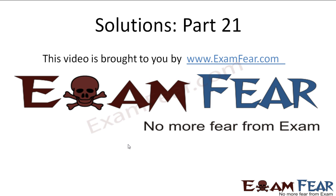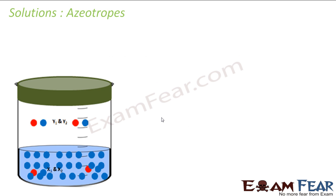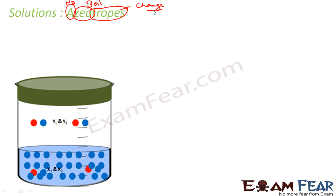Hello friends, this video on solutions part 21 is brought to you by examclear.com. Let's understand a new term called azeotropes. This word comes from Greek: 'a' means no, 'zeo' means boil, and 'tropos' means change — so azeotrope means no change in boiling.